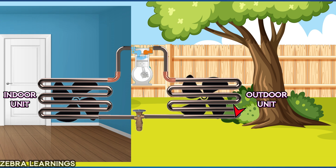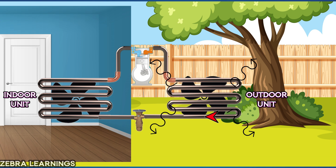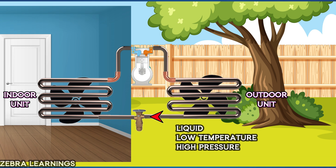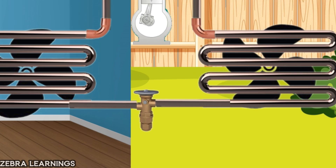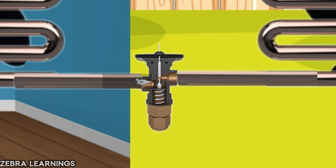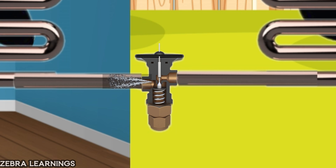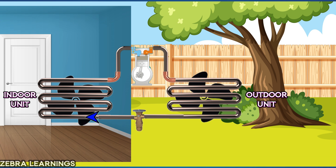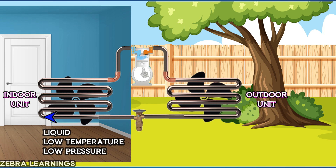The refrigerant then goes to the expansion valve at high pressure and liquid stage. The expansion valve expands the refrigerant and rapidly reduces its pressure. Since the pressure of the refrigerant decreases rapidly, its temperature also decreases, and the refrigerant enters the evaporator at low temperature and low pressure.